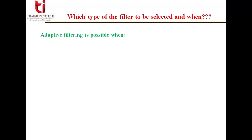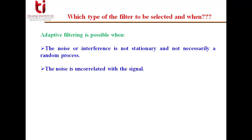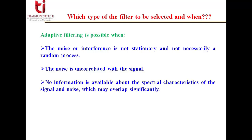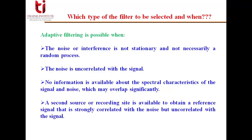Adaptive filtering is possible when the noise or interference is not stationary and not necessarily a random process. The noise is uncorrelated with the signal and no information is available about the spectral characteristics of the signal and noise which may overlap significantly. In that case we can go for adaptive filtering. Also a second source or recording site is available to obtain a reference signal that is strongly correlated with the noise but uncorrelated with the signal.